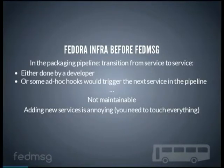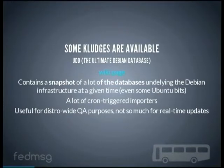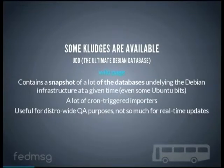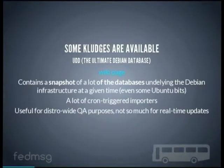There are some workarounds available to try and sidestep this problem. The Ultimate Debian Database is a snapshot of a lot of the databases used in the Debian infrastructure at any given time — even some Ubuntu bits are stored in there. This works by a lot of cron-triggered importers which run every day or every 15 minutes depending on the source, so you're not really sure at what point the data was fetched. It's useful for distro-wide QA where you can cross-reference between bits and pieces of your infrastructure, but not so much for real-time updates.